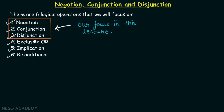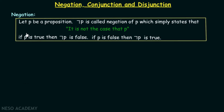Let's talk about our first operator: the negation operator. Let p be a proposition. Not p is called the negation of p, which simply states that it is not the case that p. Please note down that this is the symbol used to represent negation. If p is true, then not p is false. And if p is false, then not p is true.